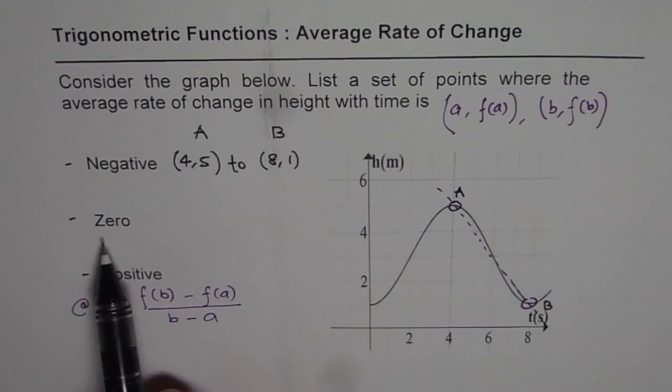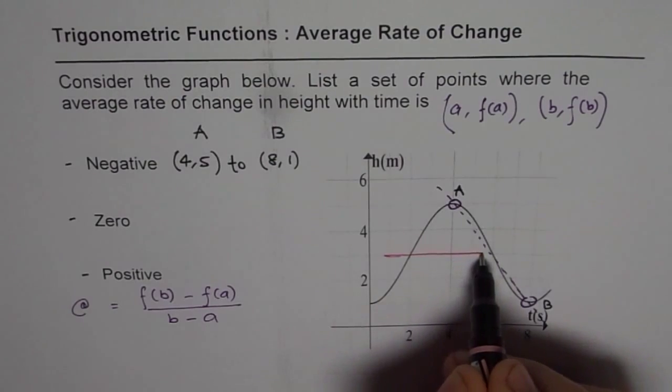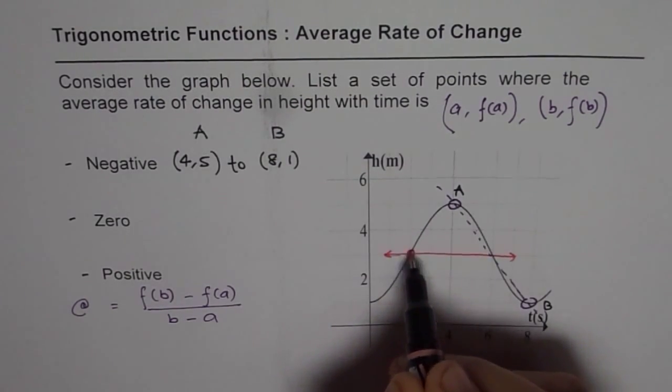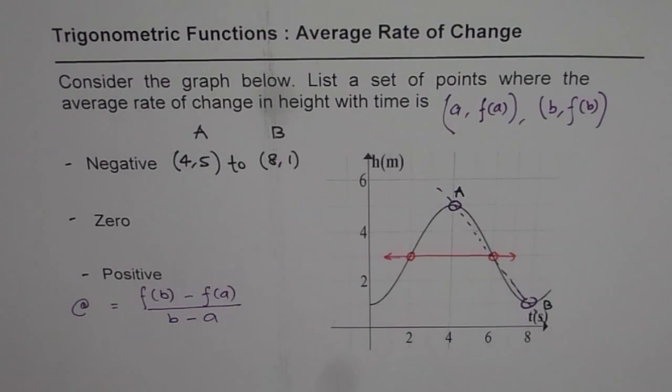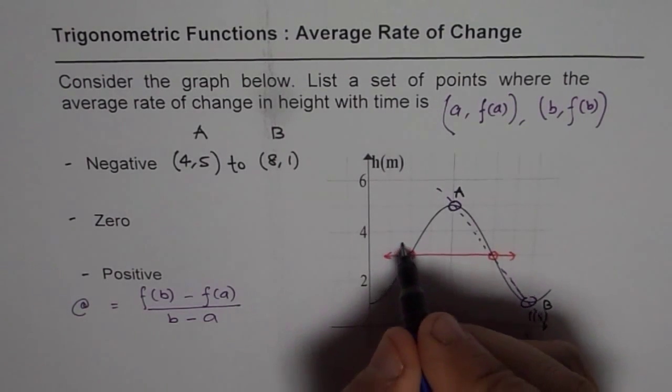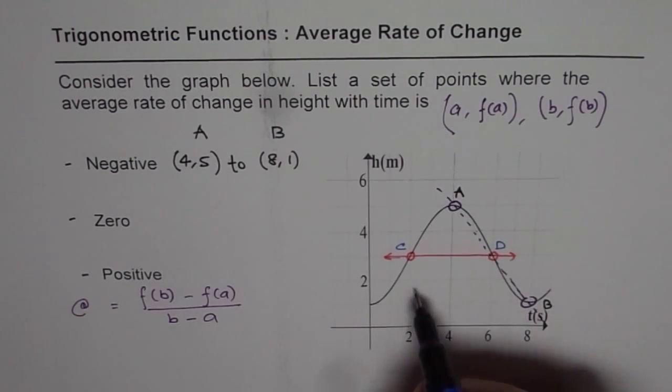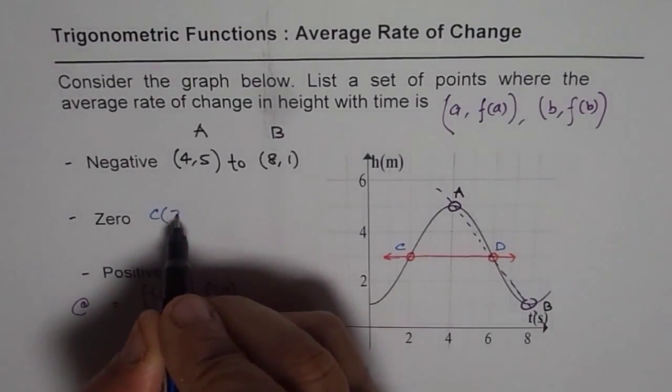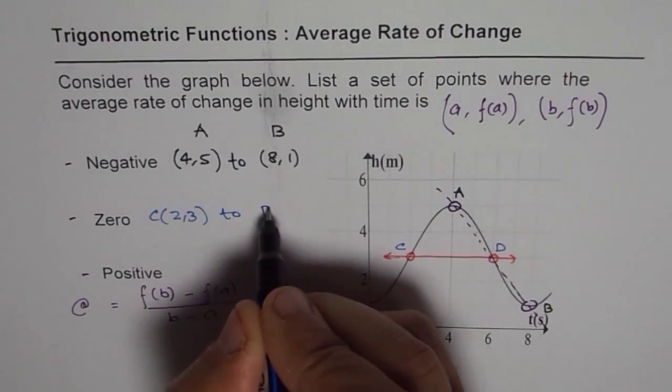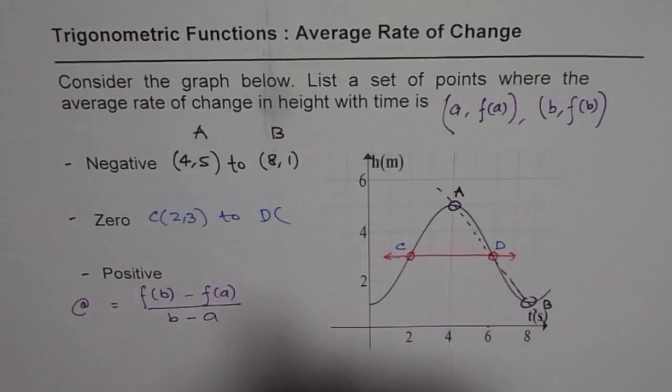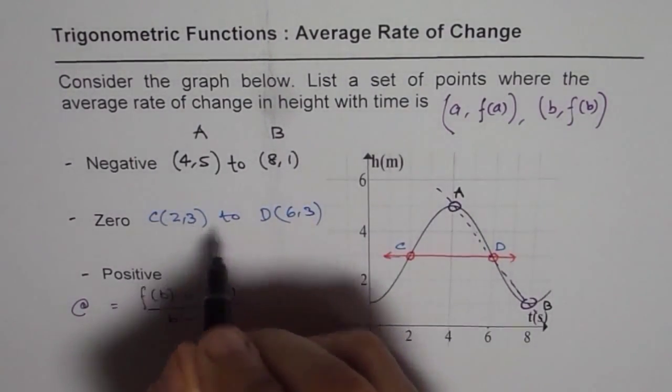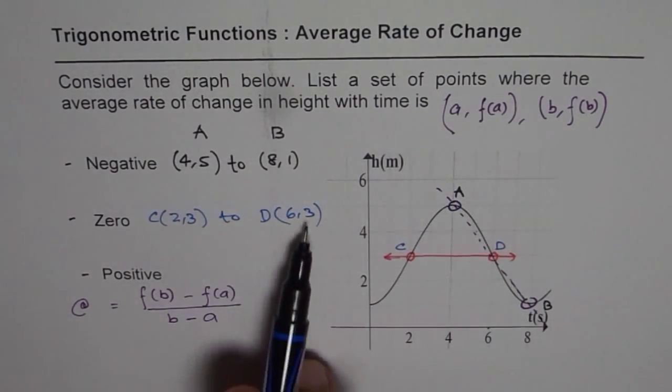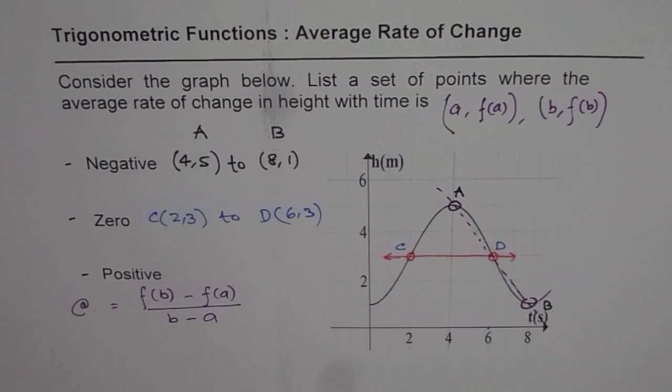Now the second is, where is average rate of change 0? Zero means horizontal line. So you could select any two points and that could be 0 for us. So we could select these two points. Let us say C and D. So these points are (2,3) for C and (6,3) for D. So the y values are same. Therefore, their difference is going to be 0. Since their difference is 0, the average rate of change is going to be 0.